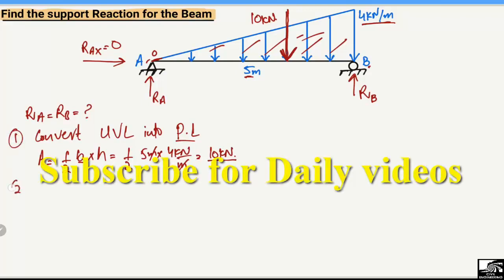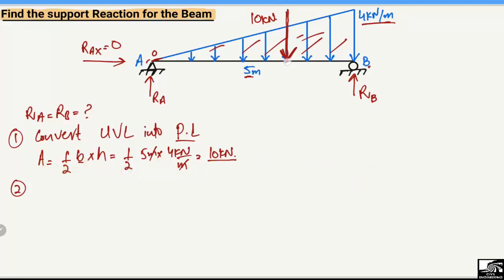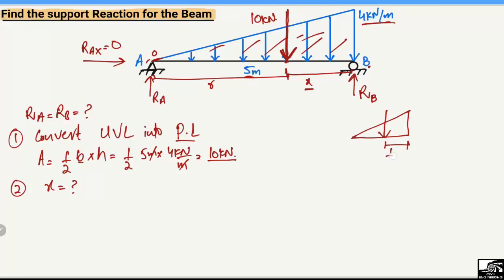The second step is to find out the moment arm — this point load will act at a certain distance from point A and from point B. For a triangular load, the resultant acts at the centroid of the triangle. The centroid of a triangle is located at one-third of the total length from the right end (the larger end), and two-thirds from the left end. For a rectangle, the centroid is at L/2, but for a triangle we must remember: 1/3 from the right end and 2/3 from the left end.